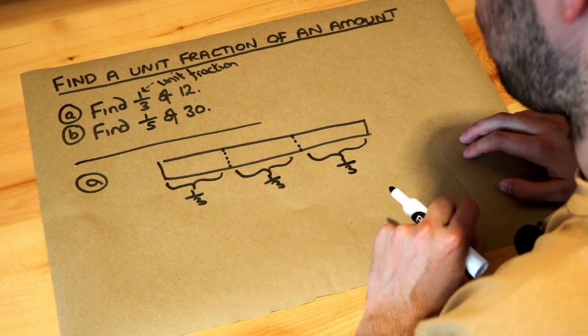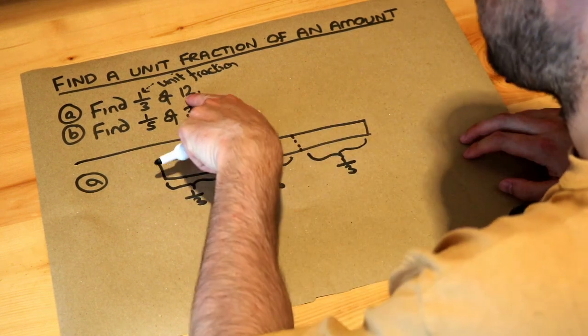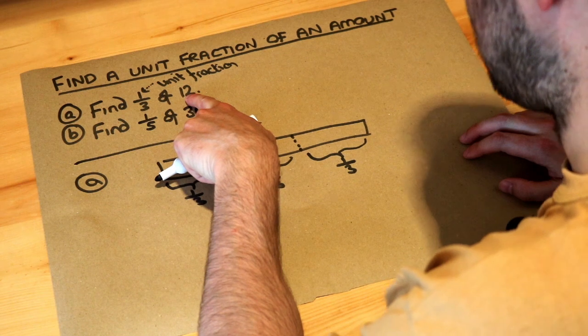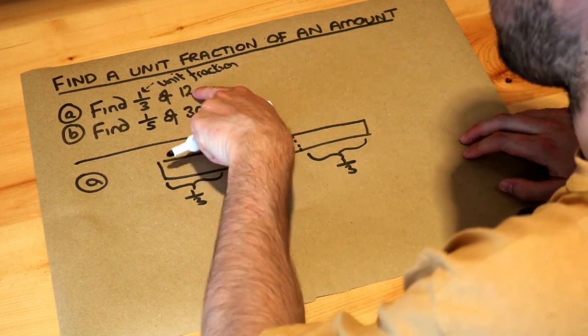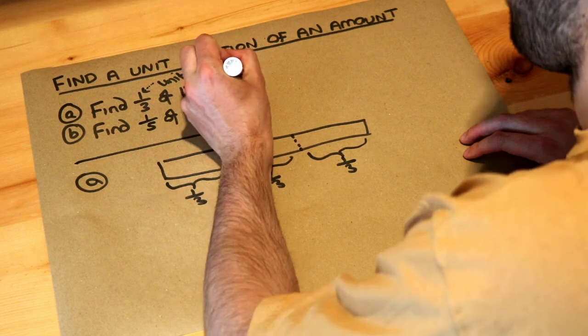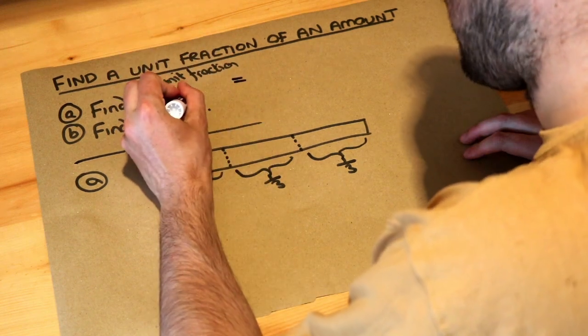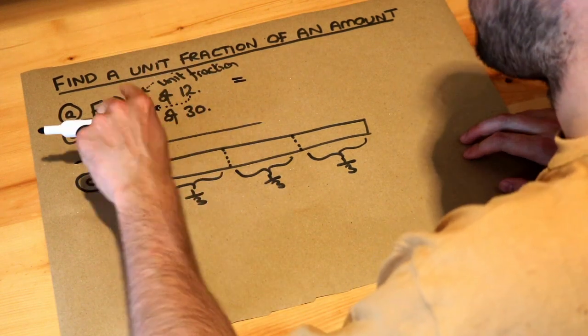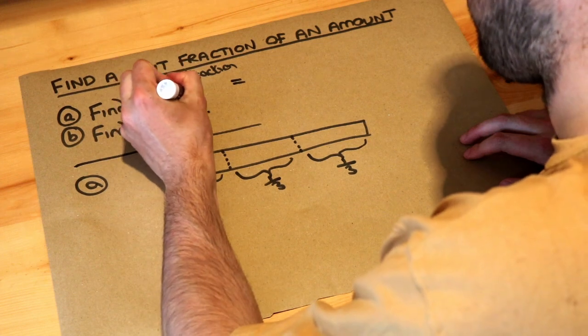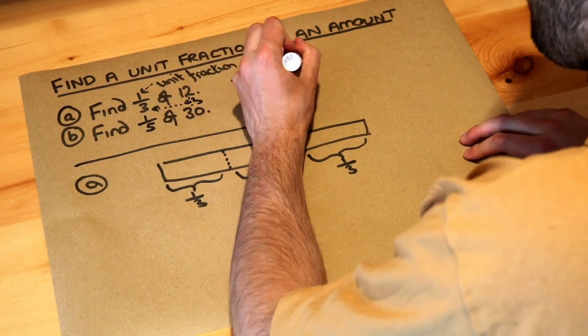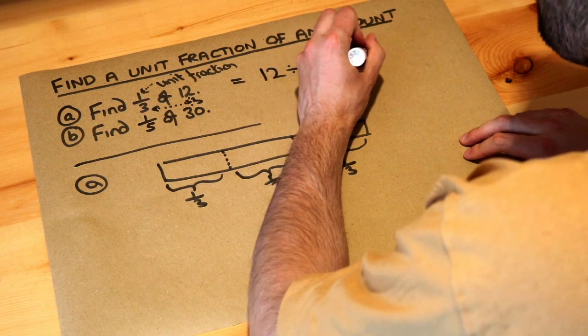Now this 12, we want to split into three parts, and all that means is we just need to divide the 12 by three. So all we do is divide that 12 by this denominator here, we divide by the three. So we do 12 divided by 3, which is equal to 4.